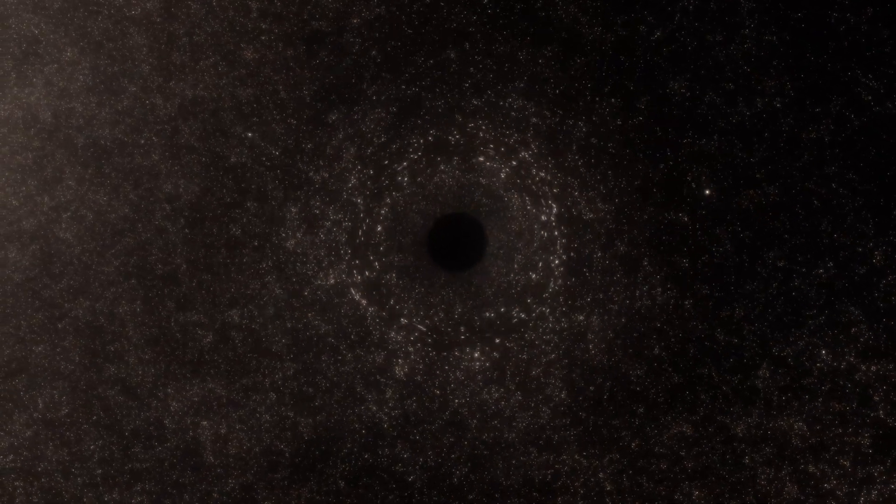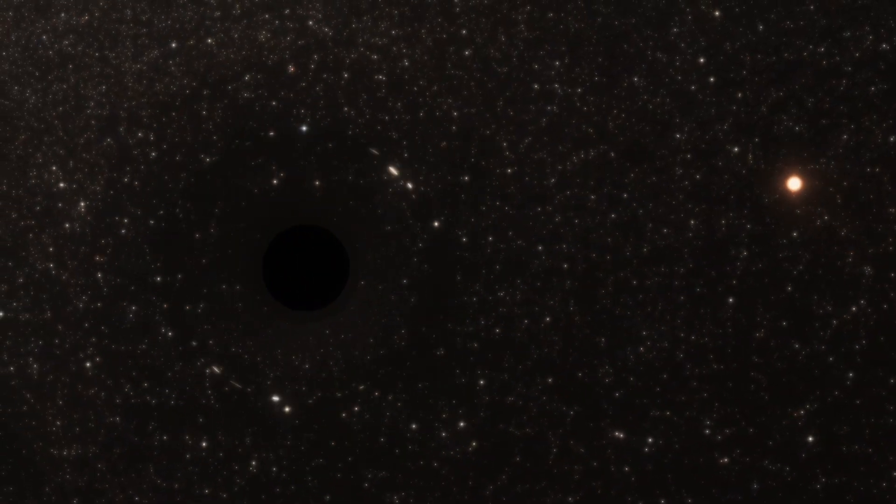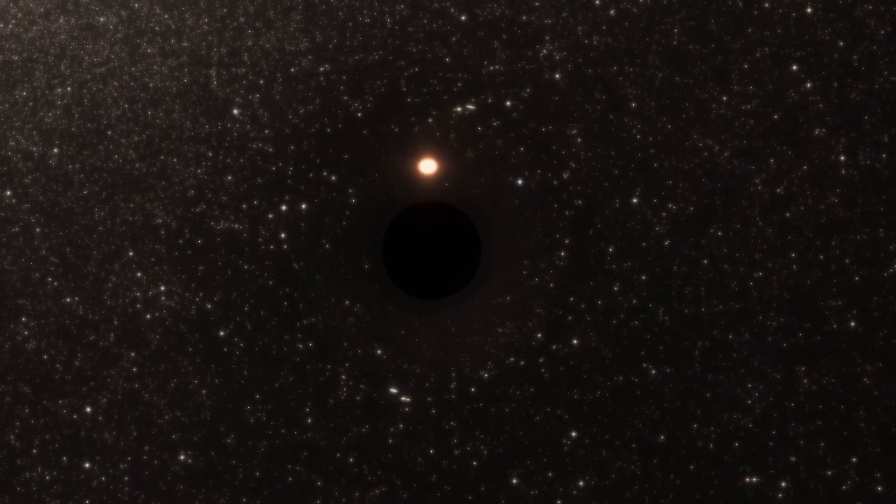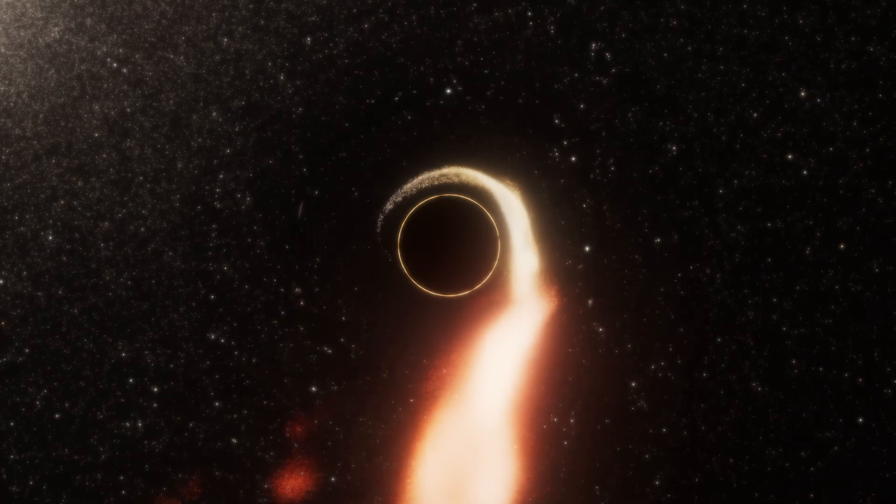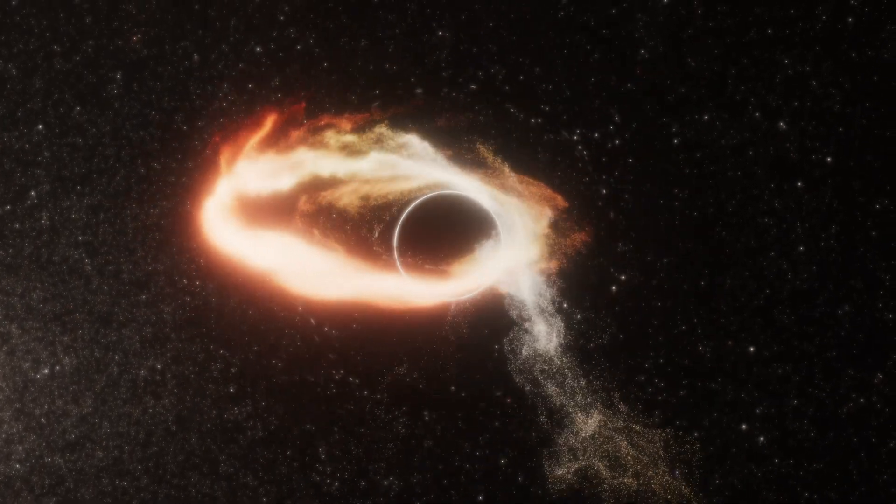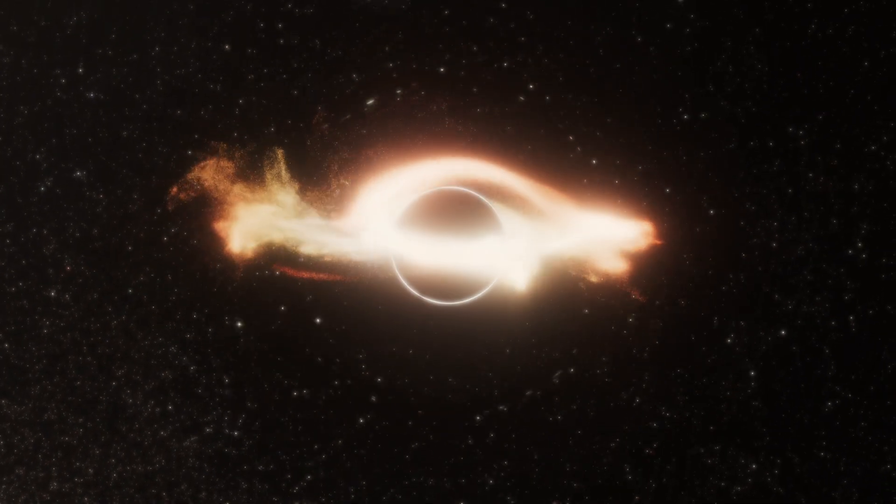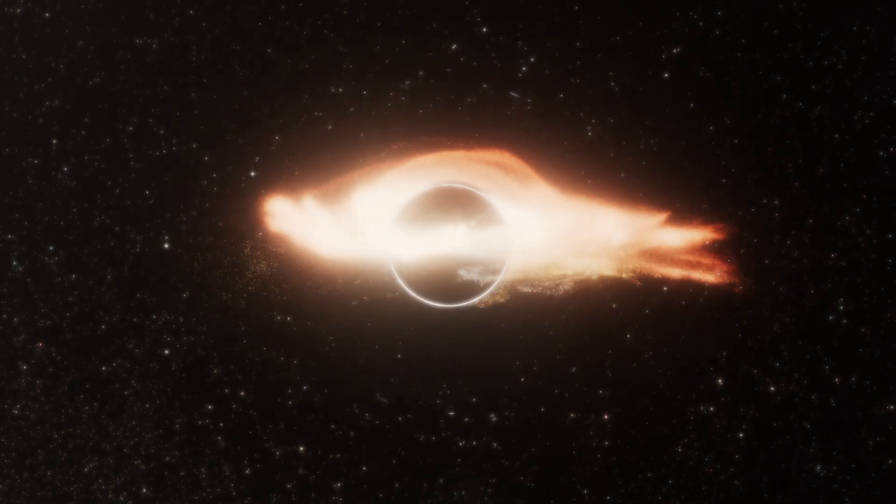Watch closely as an unfortunate star drifts dangerously near. The powerful gravitational forces swiftly seize the star, stretching and pulling it apart in a stunning display of cosmic destruction. As the star spirals inward, it ignites a brilliant flash of radiation, briefly shining brighter than its entire galaxy.